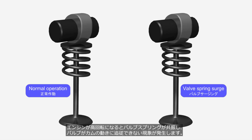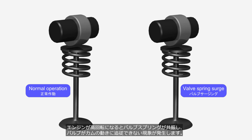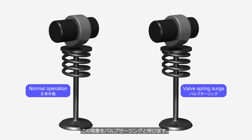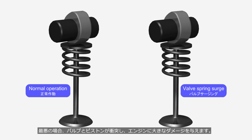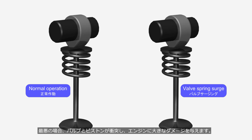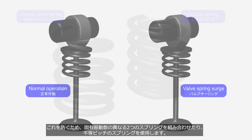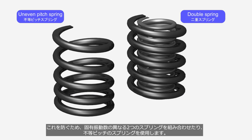At high engine speeds, a phenomenon occurs in which the valve springs resonate, causing the valves to be unable to follow the cams' movement. This phenomenon is referred to as valve spring surge. In the worst case, the valves and pistons can collide, causing significant damage to the engine. To prevent this, two springs with different natural frequencies are combined, or springs with uneven pitch are used.